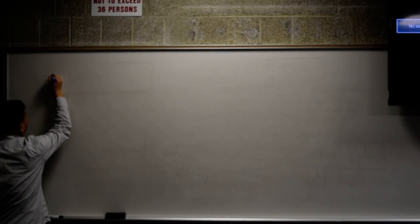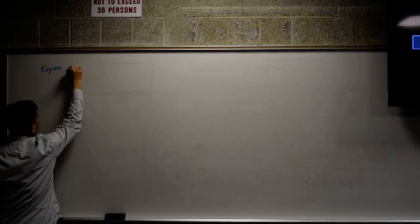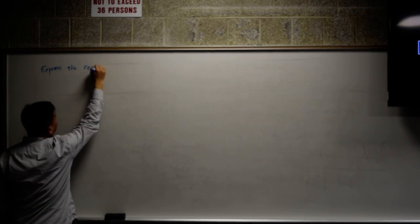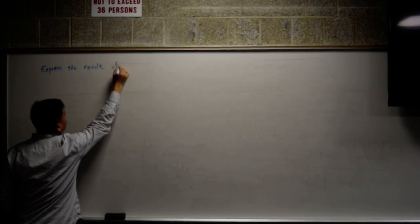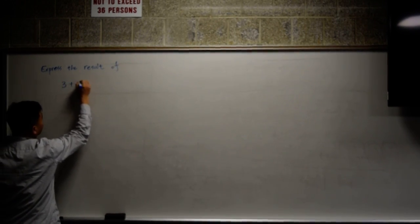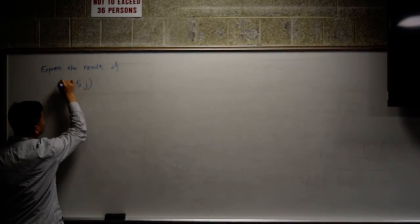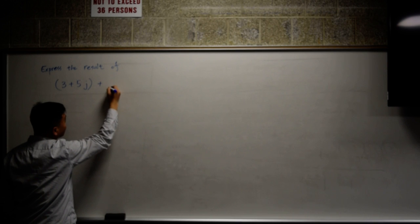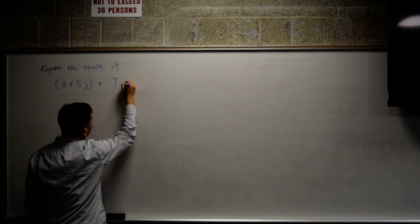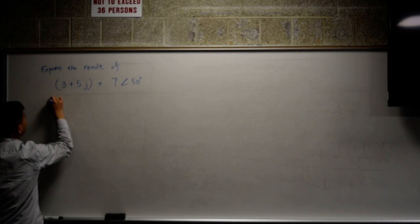Suppose you have the following question. Express the result of 3 plus 5j plus 7 angle 50 degrees in polar form.